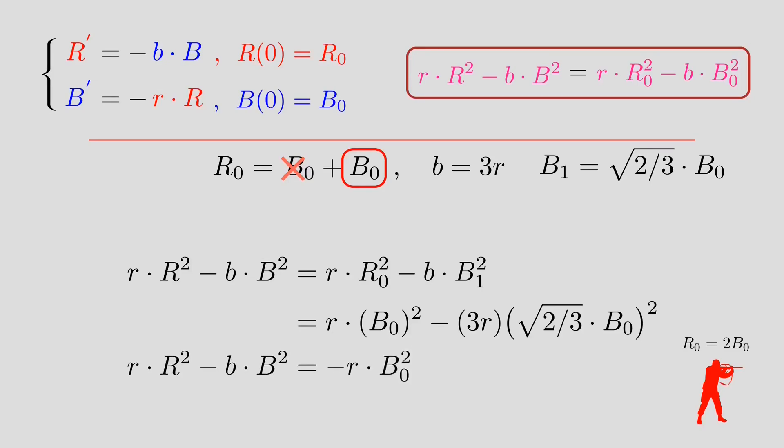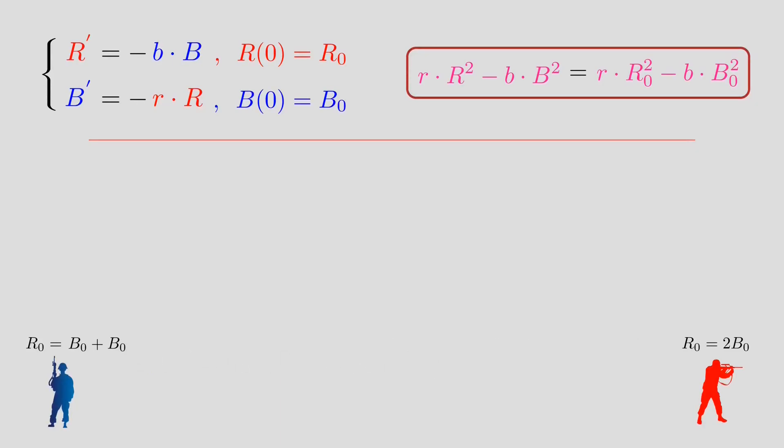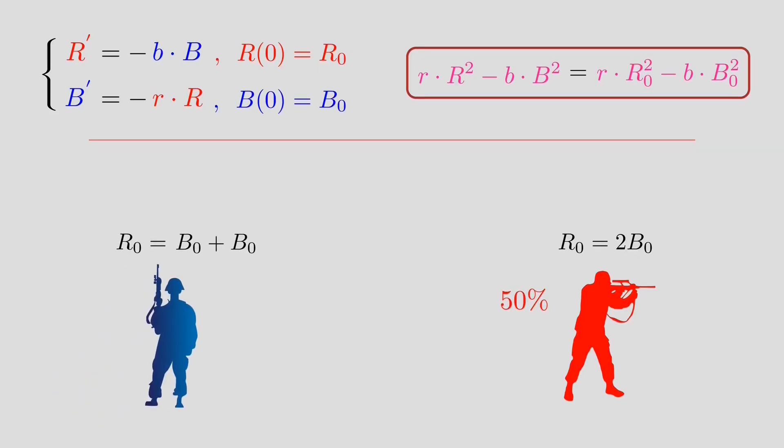So we see that when the red army fights as a group, it wins. But when it was divided, it lost. It's even worse because the number of soldiers remaining when it wins is 50%. But when it's divided, it loses and 60% of the blue army soldiers remain.